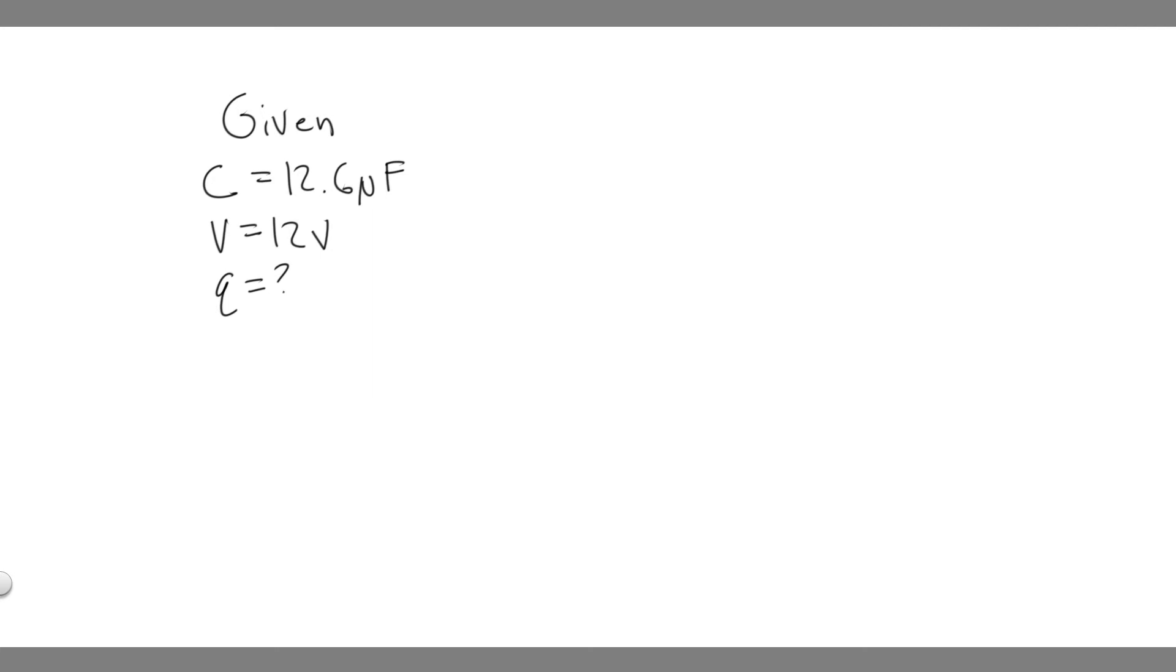And so what we know here is the capacitance of our circuit or of the capacitor, and then we know the voltage of the battery and we need to solve for Q. And so we can relate these variables using the equation Q equals CV.